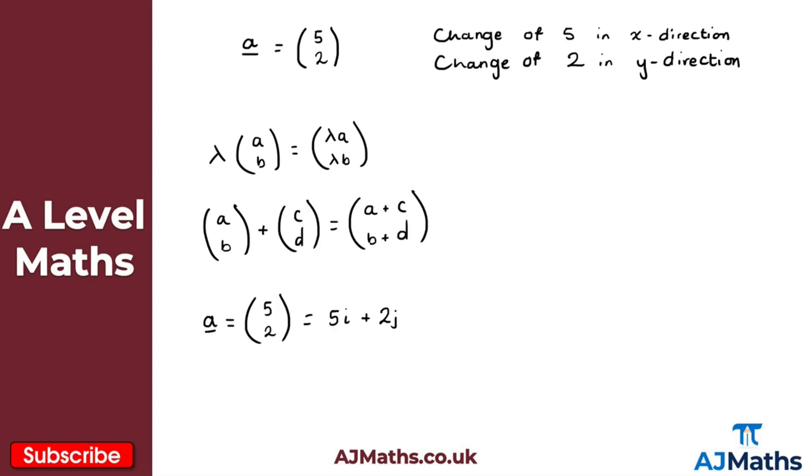And we also have our unit vectors. So in this case, so for the unit vectors here, we have I, so the vector I here, which is 1, 0. That's 1, 0. And then the unit vector here of J, which is 0, 1 there.